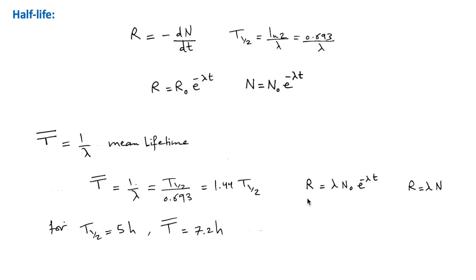We can express the activity R in terms of N, which is the number of undecayed nuclei. R equals lambda N. This shows that the activity is proportional to the number of atoms present in the sample.